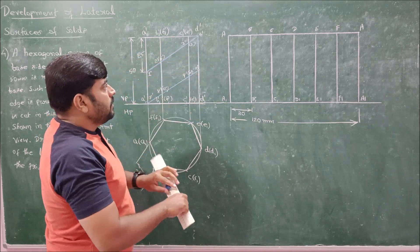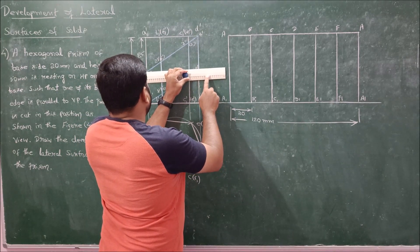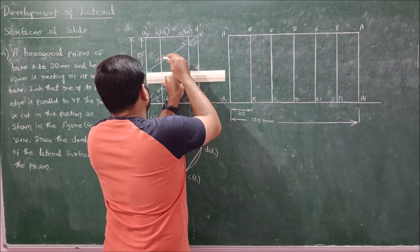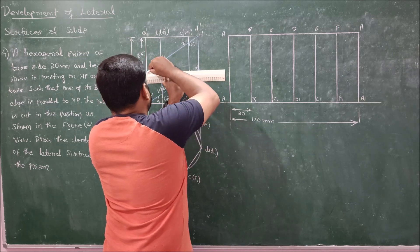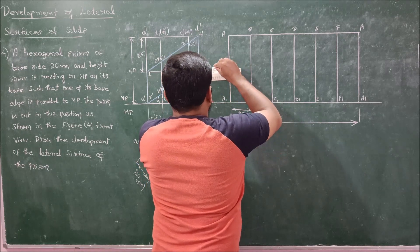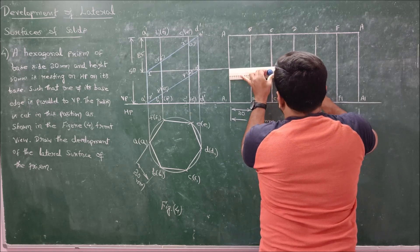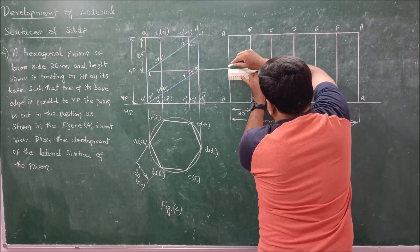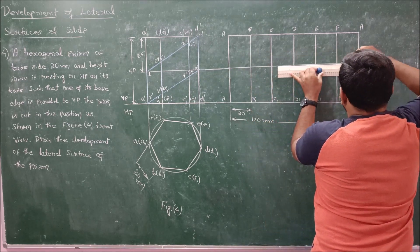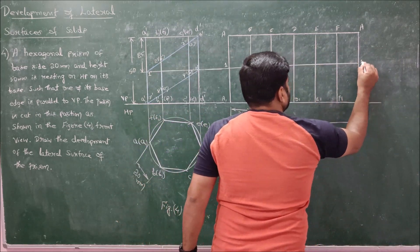Once you have unfolded the prism, now transfer the cutting points onto this unfolded prism by using parallel lines. So 1 dash is on longer edge A1 dash A dash so therefore transfer it to the longer edge A1 A in the development. So just by drawing a parallel line you can transfer it like this. The first and the last longer edges are same that is A1 A so project it on to the last longer edge also. So this will give us point 1.